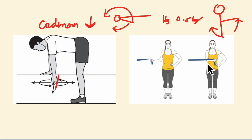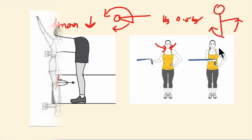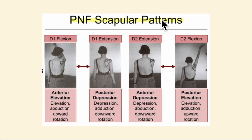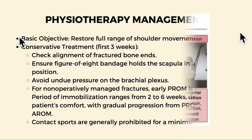Self-resistive exercises and mobilization with a wand can be given as home exercises — for example, banded internal rotation. Cervical range of motion exercises are also important as the neck can become stiff due to the long period of immobilization. Scapular retraction and stabilization exercises such as prone Y, prone T, and prone W exercises are introduced as the patient progresses, followed by PNF scapular patterns — D1 flexion, D1 extension, D2 flexion, and D2 extension.